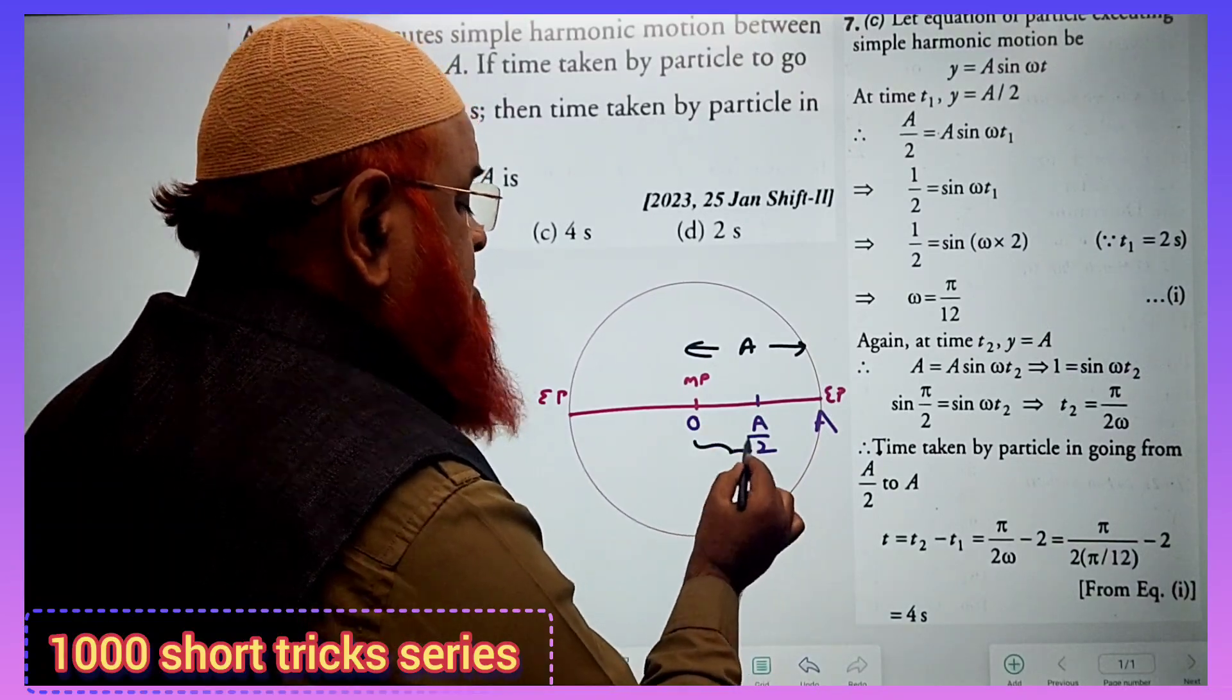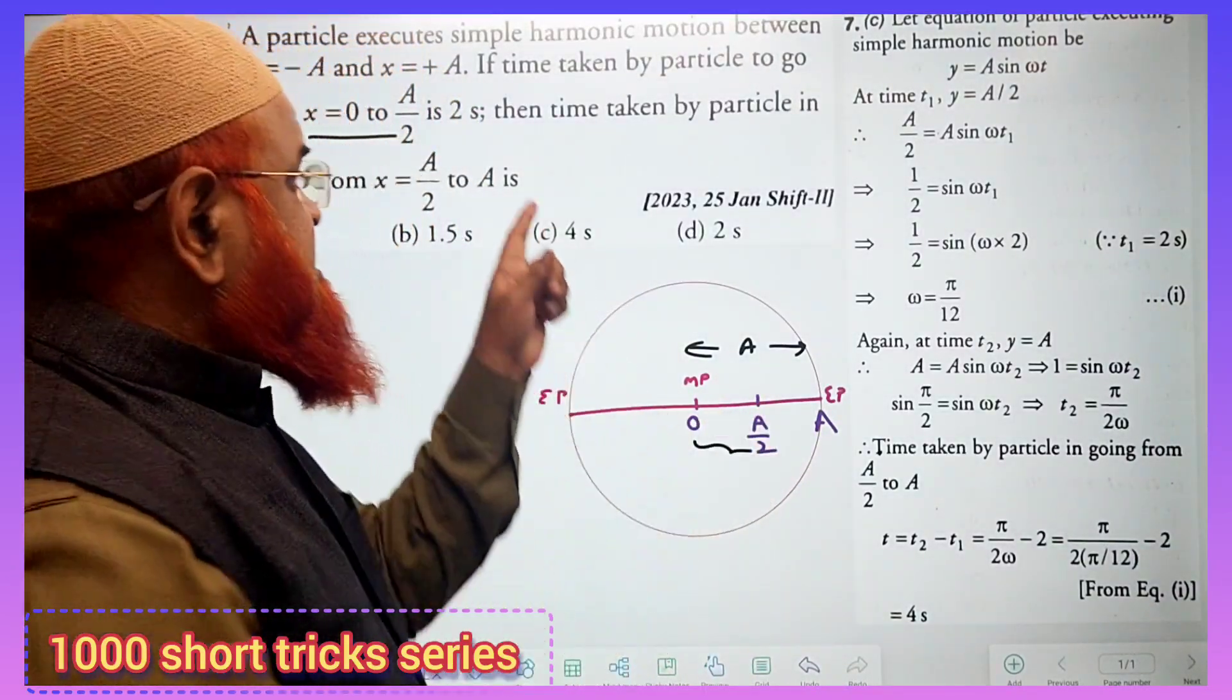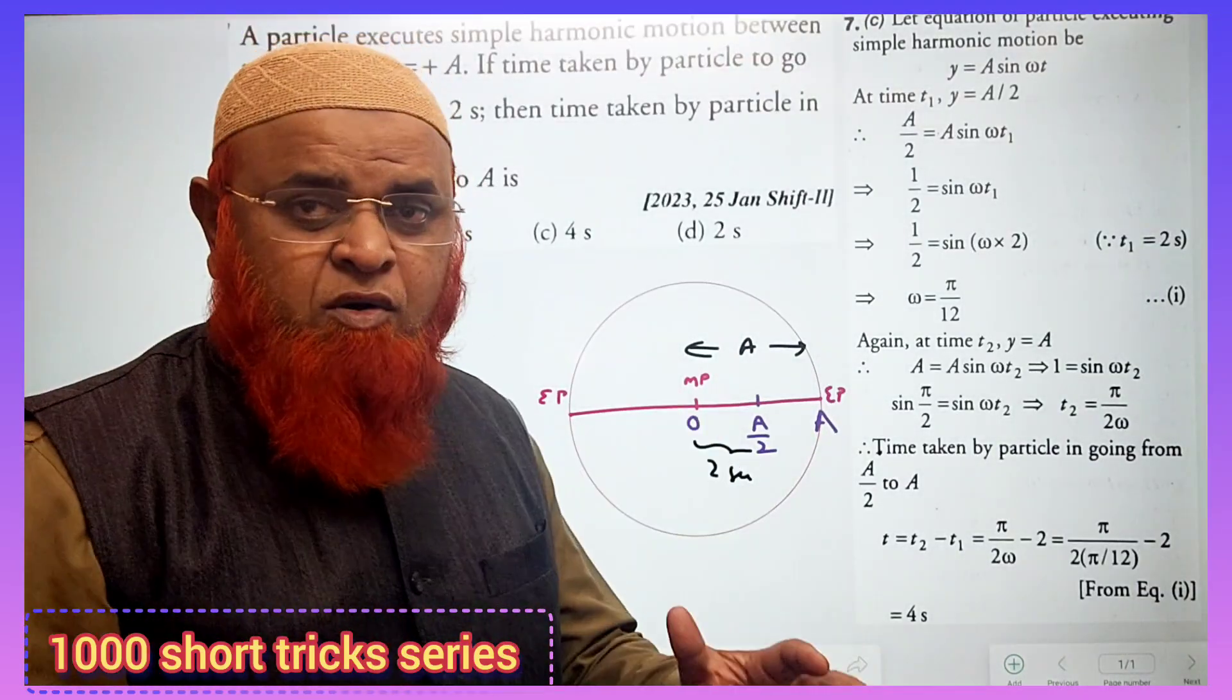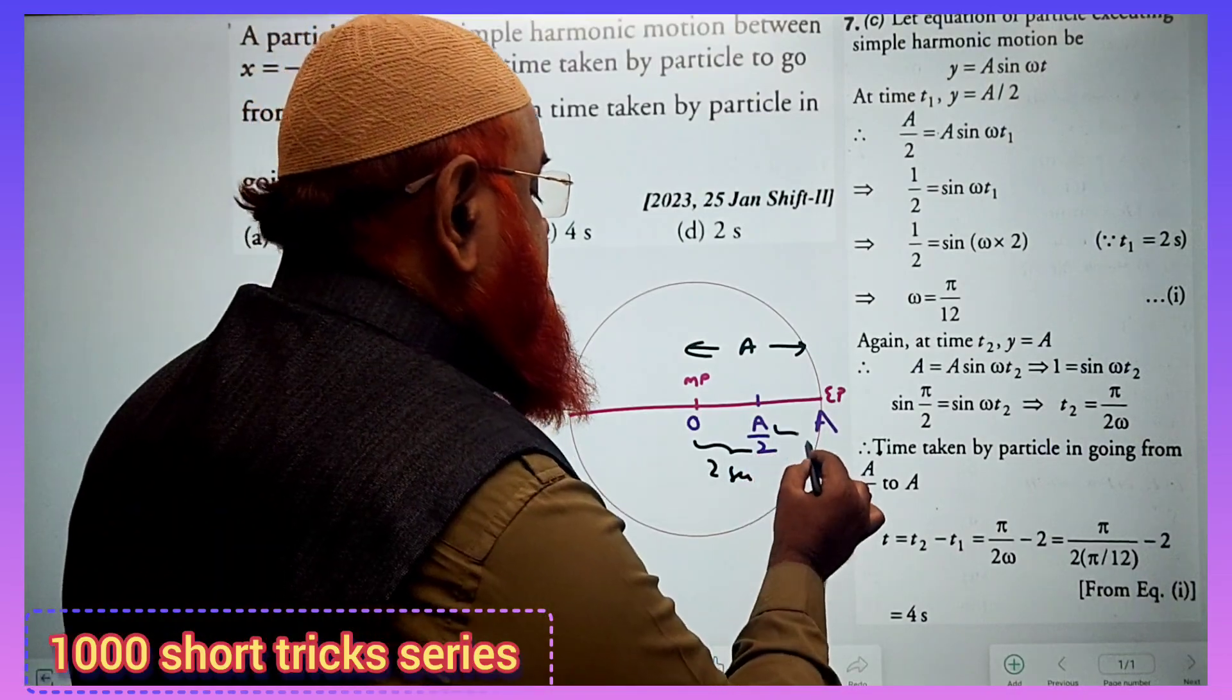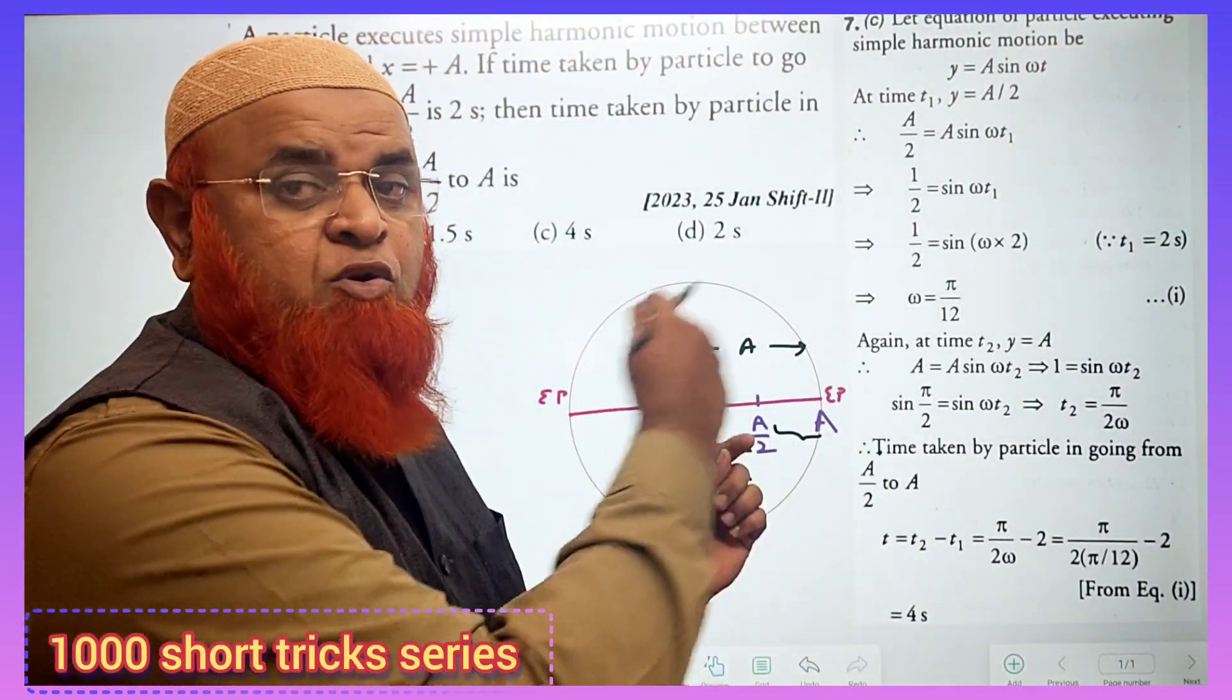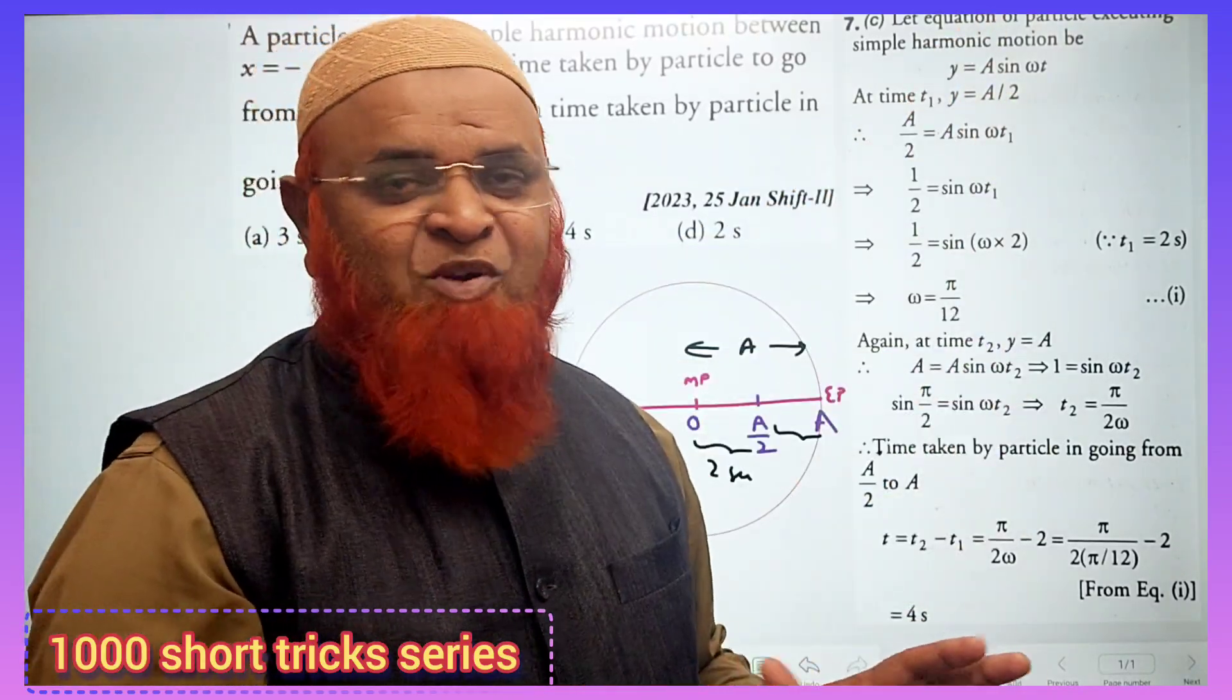So what is the time taken from 0 to A by 2? It is given in the problem: it is 2 seconds. And he is asking us to find out what is the time taken in the remaining portion, from A by 2 to the extreme position, that is A. For that, the textbook has given a very lengthy process.